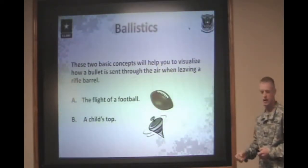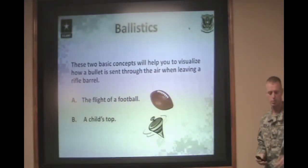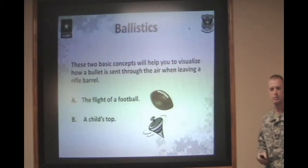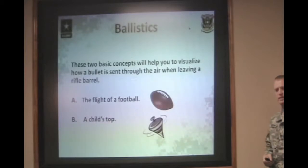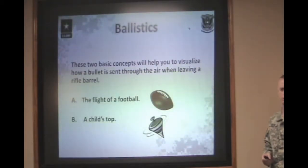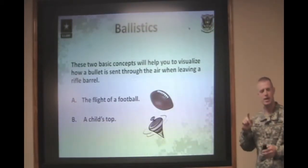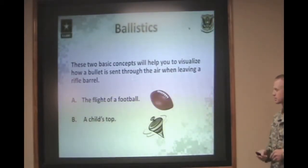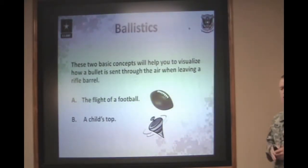Then you have a child's top. If you set a top on a table and spin it very quickly, it stays stable for a very long time. If you bump that top while it's spinning at a high rate of speed, it rights itself and stays pretty stable. Once that top starts to slow its rotations down, it becomes very unstable and eventually will just fall over. A bullet does the exact same thing — we spin that bullet at a high rate of speed, keeping it nose-forward going downrange until it slows down enough to where it becomes erratic.